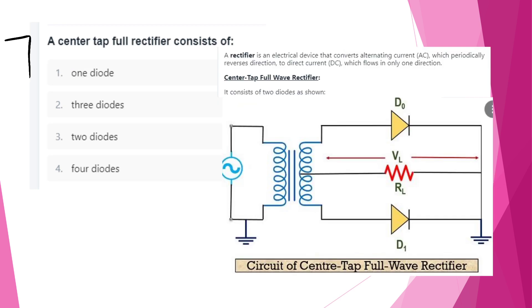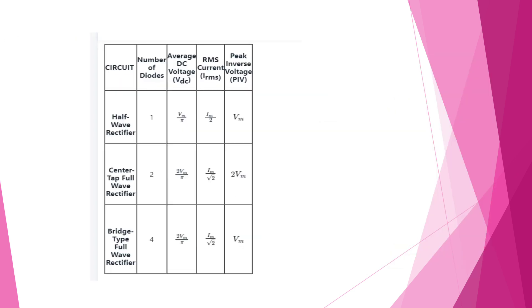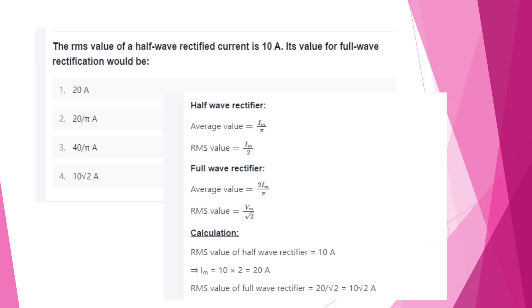7th question: a center-tap full-wave rectifier consists of how many diodes? The answer is 2 diodes.